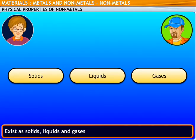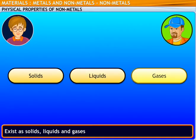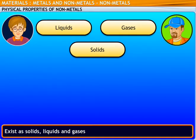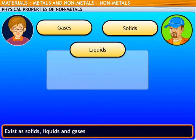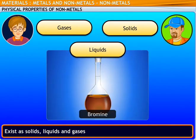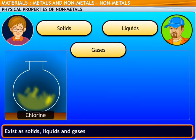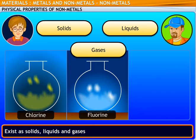Non-metals exist in all three states: solids, liquids and gases. For example, silicon and carbon are solids. Bromine is a liquid. Chlorine, fluorine and oxygen are gases.